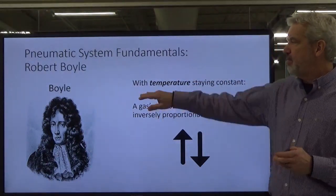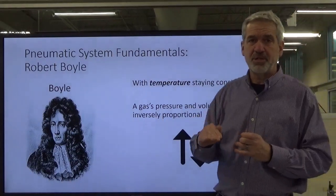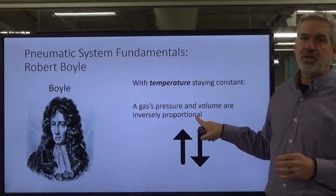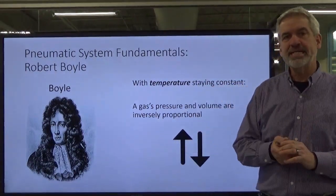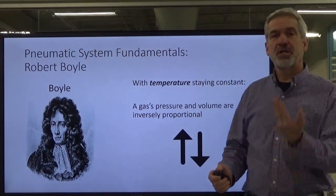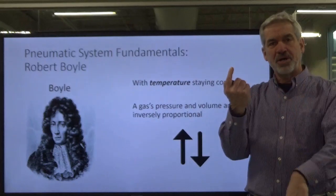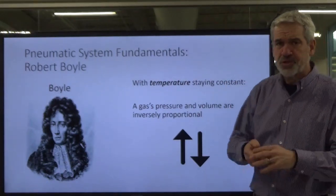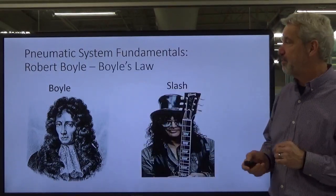First of all, we're going to talk about Mr. Boyle. Robert Boyle said that as long as the temperature is staying the same, kind of constant temperature where it's not fluctuating on us, the gas's pressure and its volume are going to be inversely proportional. And what that means is that when one goes up, the other goes down. If the pressure were to go up, the volume would go down. If the volume were to go up, the pressure would go down. They are inversely proportional.